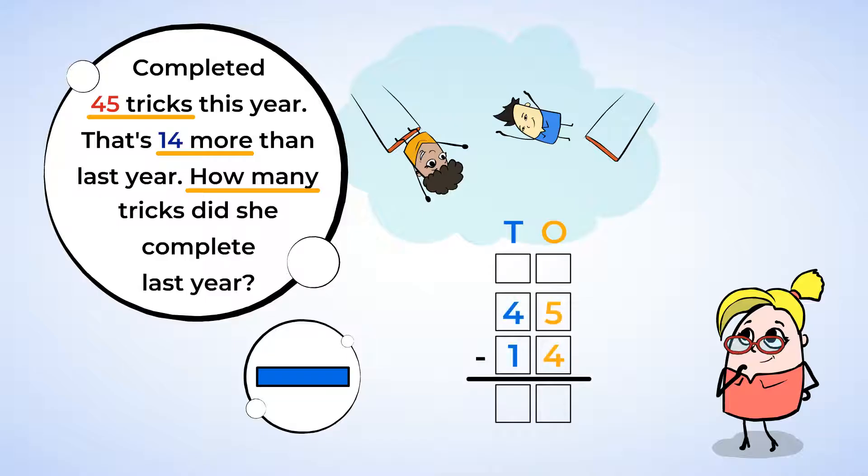When subtracting, we always start with the ones place. So first, subtract 5 minus 4, and that's 1. So you can put a 1 in the ones place. Now look at the tens place. Subtract 4 minus 1, and that's 3. Put a 3 in the tens place. And there we have it. 45 minus 14 is 31.